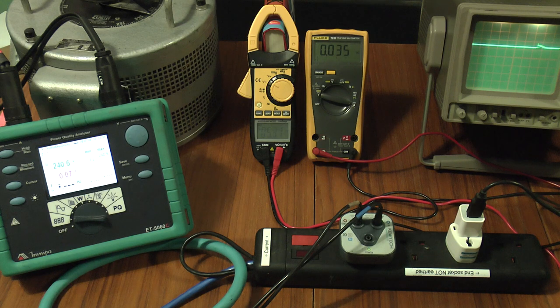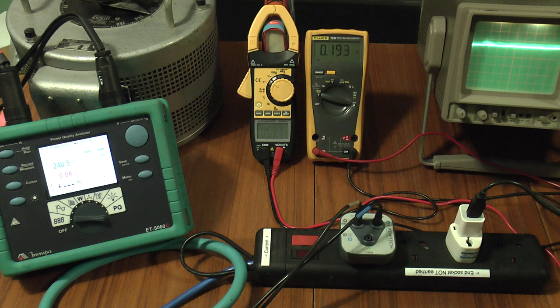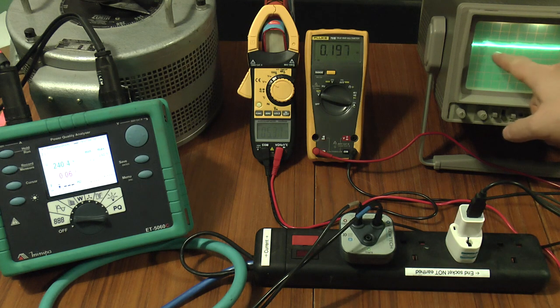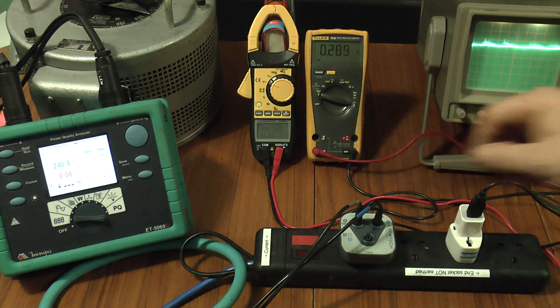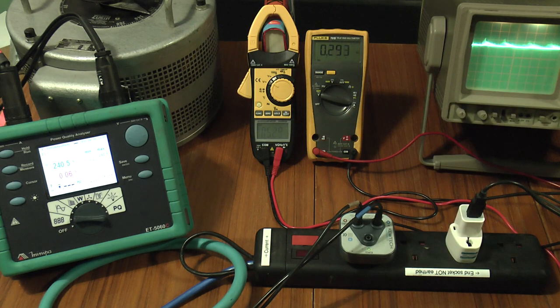And we're drawing about 35 milliamps. So let's take that up. 180 milliamps, a lot more noise on here. Seems to settle back down as I take it up. It's still 5.3 volts at the moment, so fairly stable.